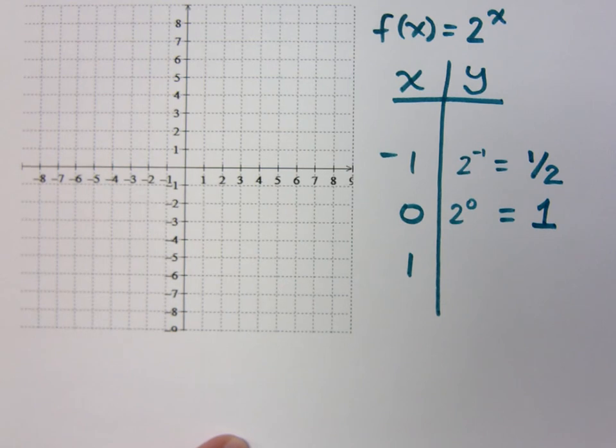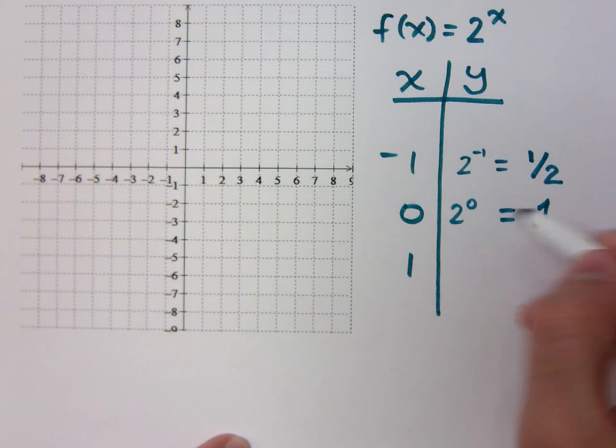So if I plug in negative 1, 2 to the negative first means 1 over 2. You do the reciprocal. 2 to the 0 is just 1. Remember that? Anything to the 0 is 1 except for 0.